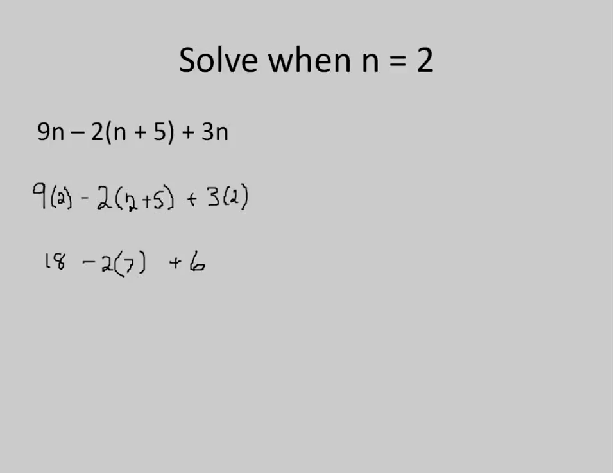So because these are separated by addition, subtraction, I can solve this part by itself, then this part, then this part separately, knowing that I'm not going to be adding or subtracting any of them until the end. 2 times 7 is 14.